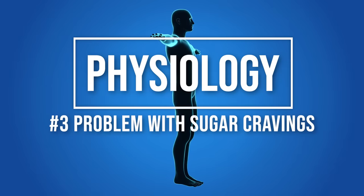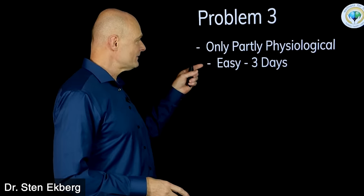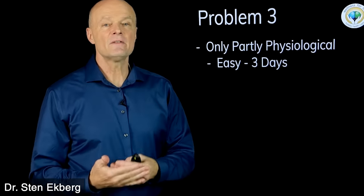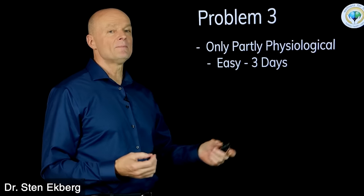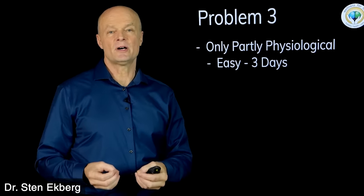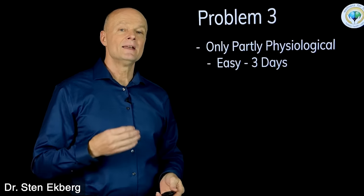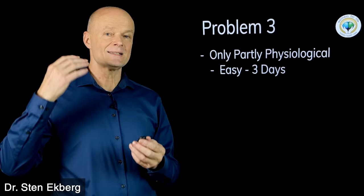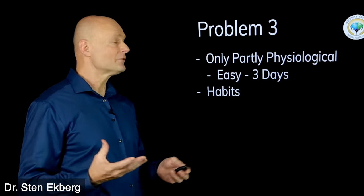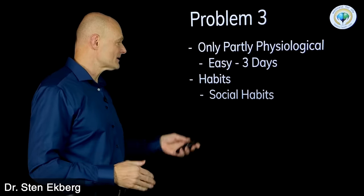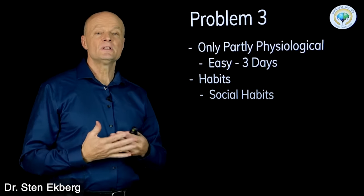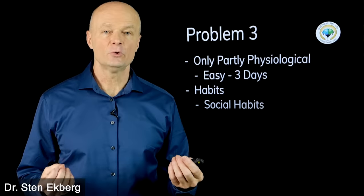Problem number three of sugar addiction is that the physiology that we just talked about, the changes in the wiring of the body, the carb dependency and the drug effects, that's only part of it. That's the easy part to fix, because if you cut it out your body adapts very fast. In about three days time you will have overcome that need for carbohydrates at the physiological level. The rest of it is emotional. It's in your nervous system, in your wiring, because we all have different habits.